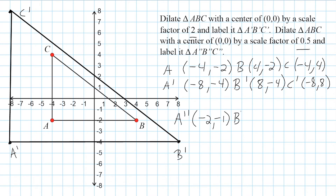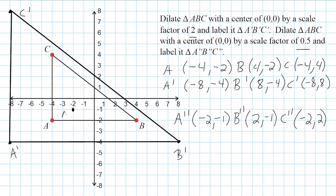The new location of B double prime is going to be positive two, negative one, because I cut each value in half. The new location of C double prime is going to be negative two, positive two. So now we can plot these points. A double prime is at negative two, negative one, located right here — we label it A double prime. B double prime is at positive two, negative one, located right here — we label that B double prime.